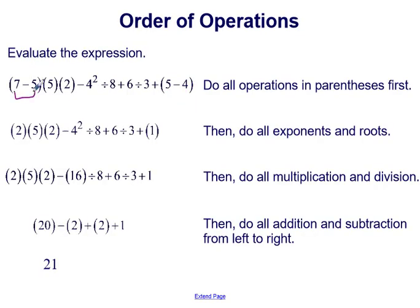So we'll have 7 minus 5 is 2 and 5 minus 4 is 1. That takes care of the P in PEMDAS in our order of operations.